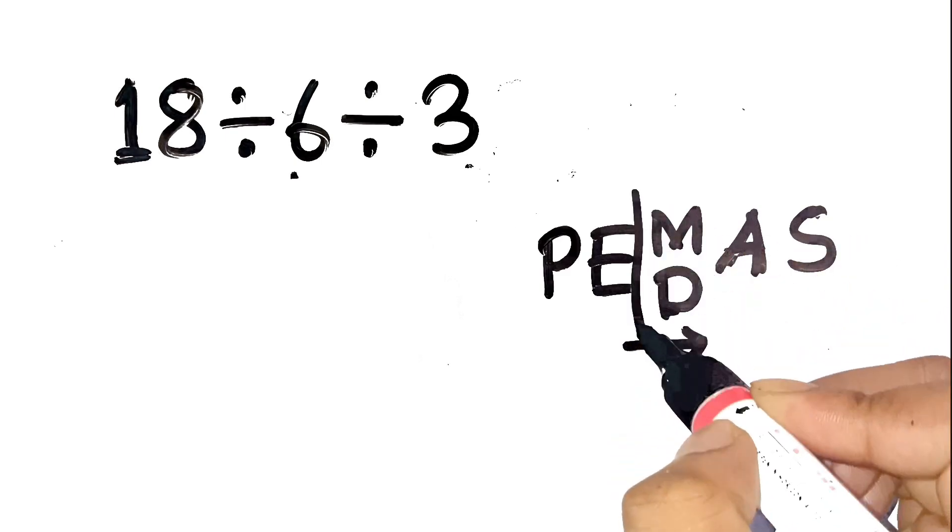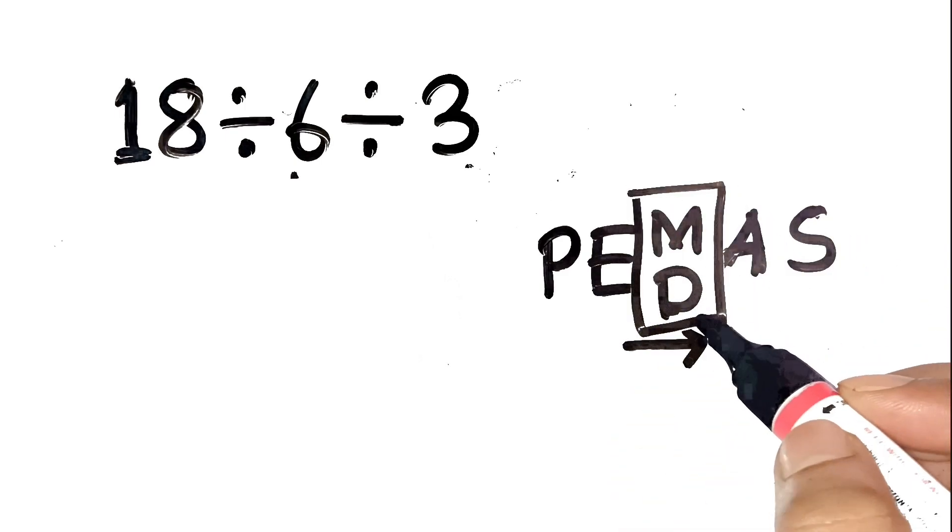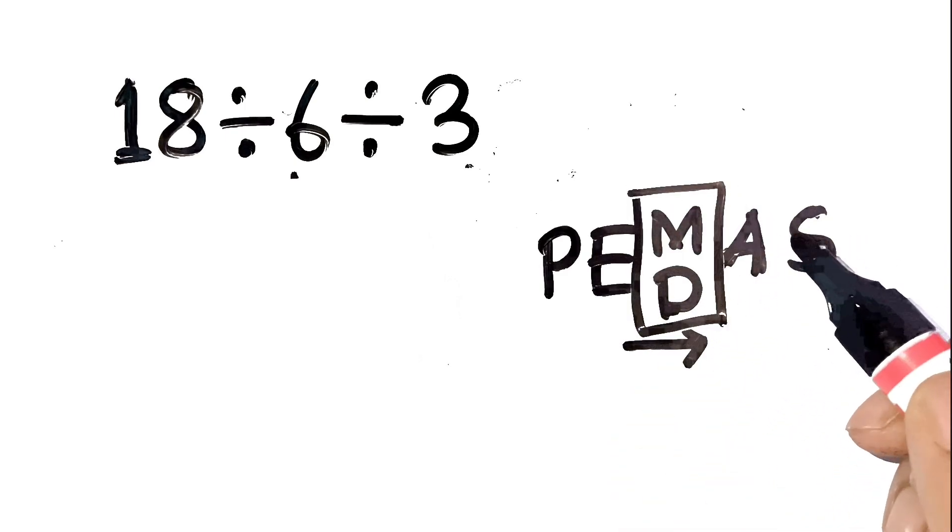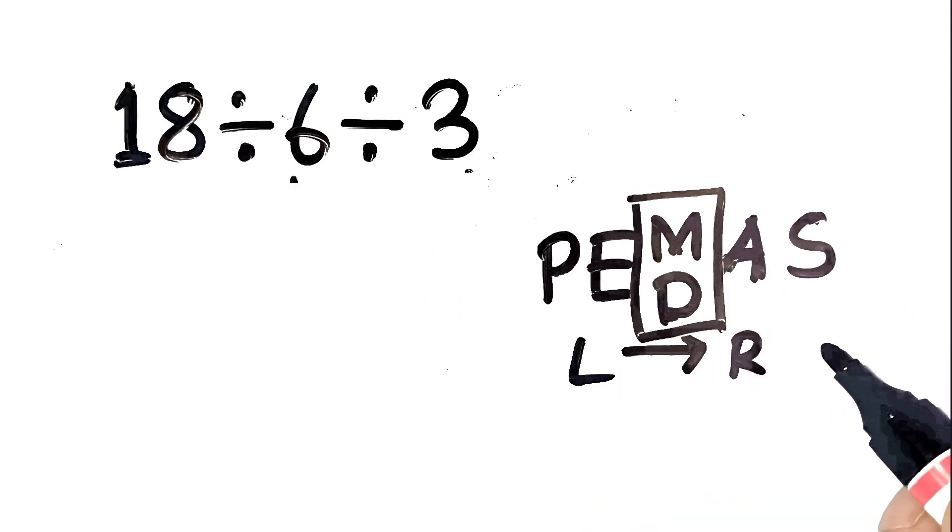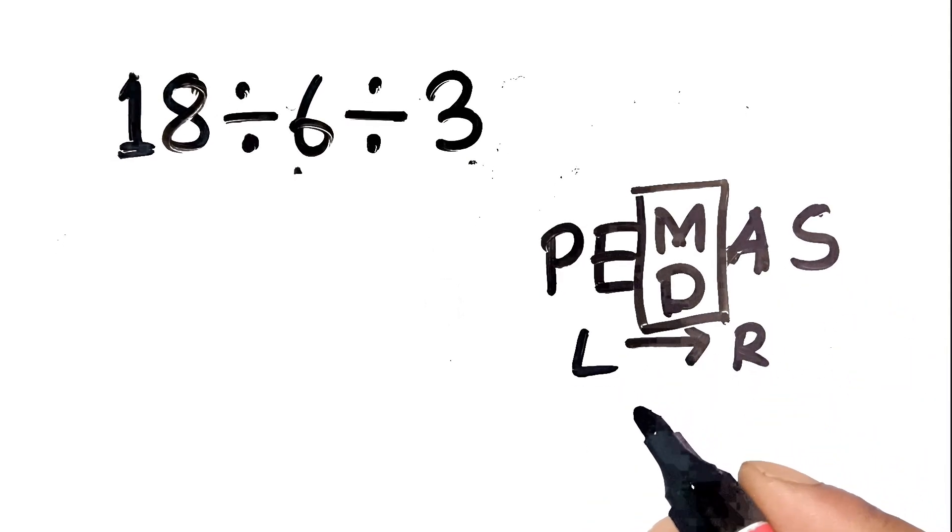A key point here: multiplication and division have equal priority, and you always work them from left to right as they appear. So you don't just pick the numbers that look easiest together.